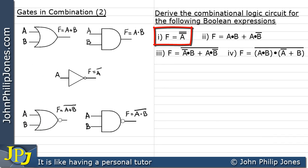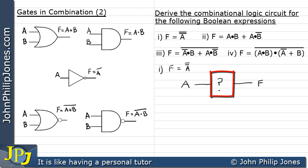Let's have a go at the first example here, which is saying F is NOT NOT A. What we're trying to achieve is a combinational logic circuit that will give us that Boolean expression at F. We're going to have input A going into some kind of logic circuit such that the output is F. What do we put between input A and output F? Well, we start with A and it needs to be NOTted twice.